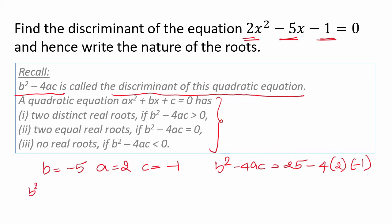This equals 25 minus 4 times 2 times (-1). 4 times 2 is 8, 8 times (-1) is -8. So 25 minus (-8) equals 25 plus 8, which is 33.